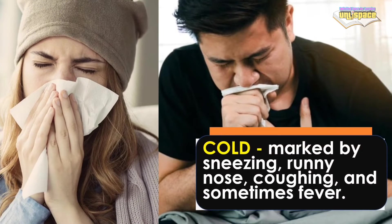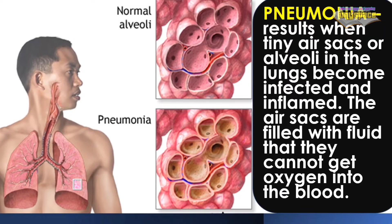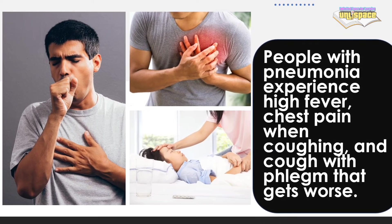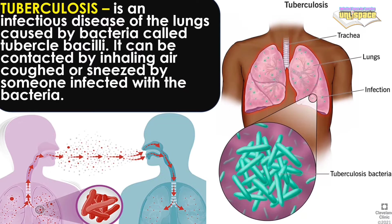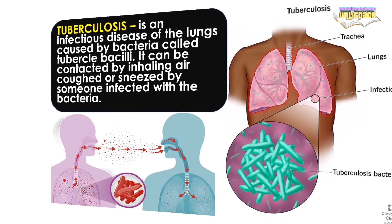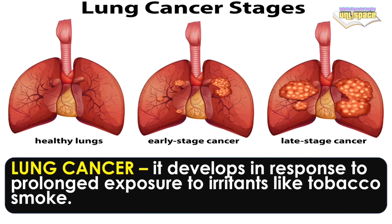Cold is marked by sneezing, runny nose, coughing, and sometimes fever. Pneumonia results when tiny air sacs or alveoli in the lungs become infected and inflamed. The air sacs are filled with fluid so they cannot get oxygen into the blood. People with pneumonia experience high fever, chest pain when coughing, and cough with phlegm that gets worse. Tuberculosis is an infectious disease of the lungs caused by bacteria called tubercle bacilli, contracted by inhaling air coughed or sneezed by someone infected. Lung cancer develops in response to prolonged exposure to irritants like tobacco smoke.